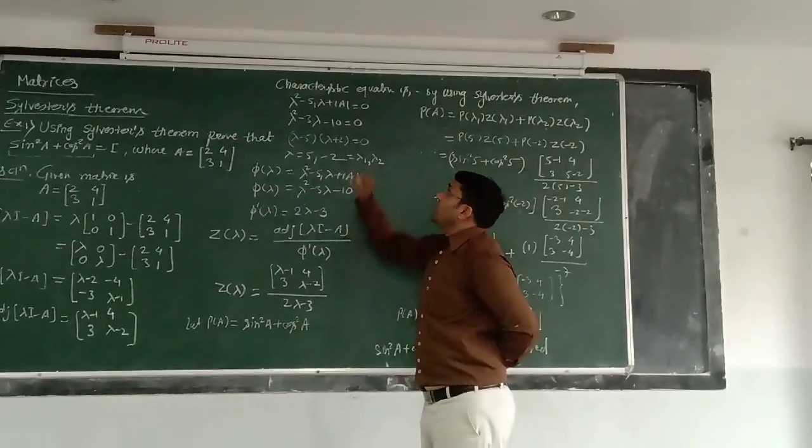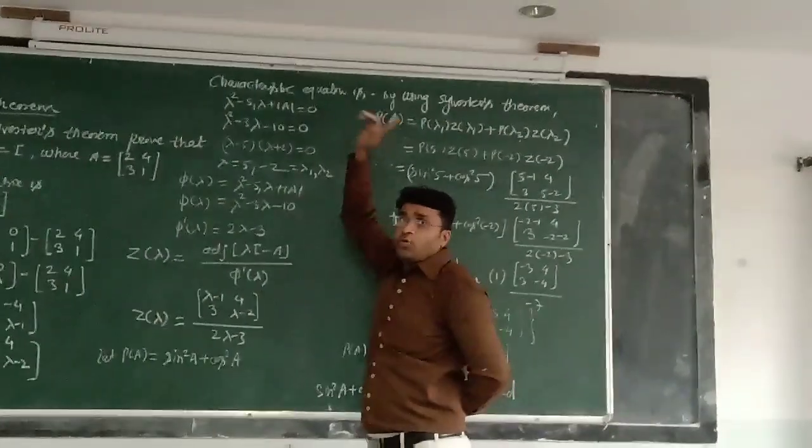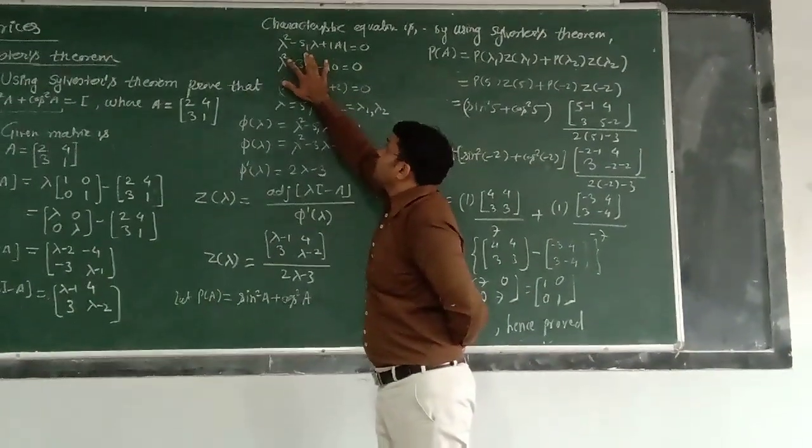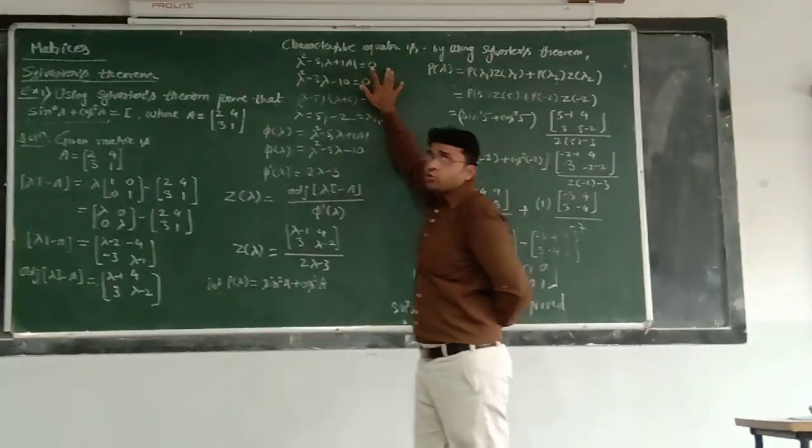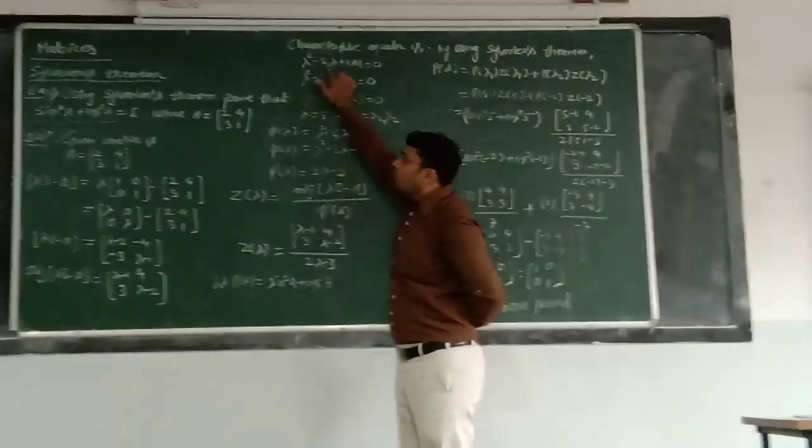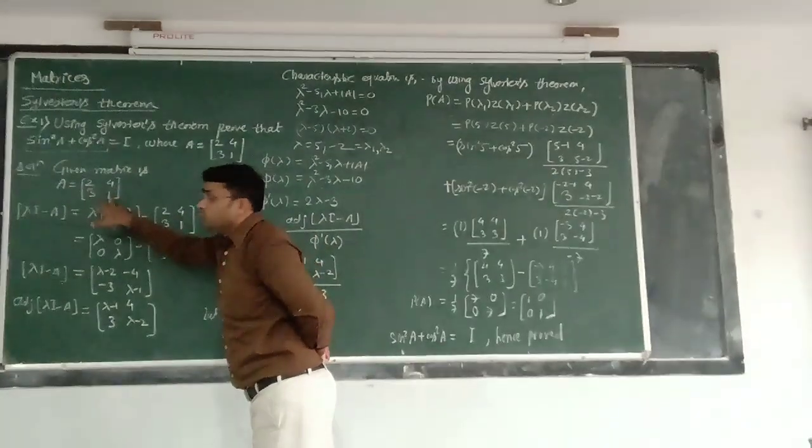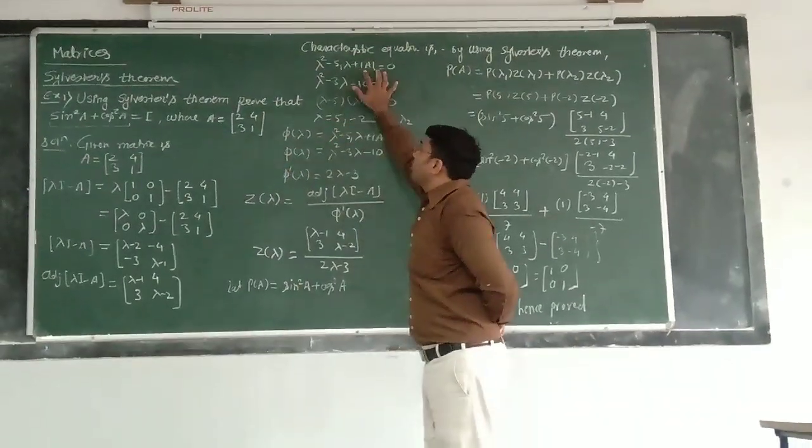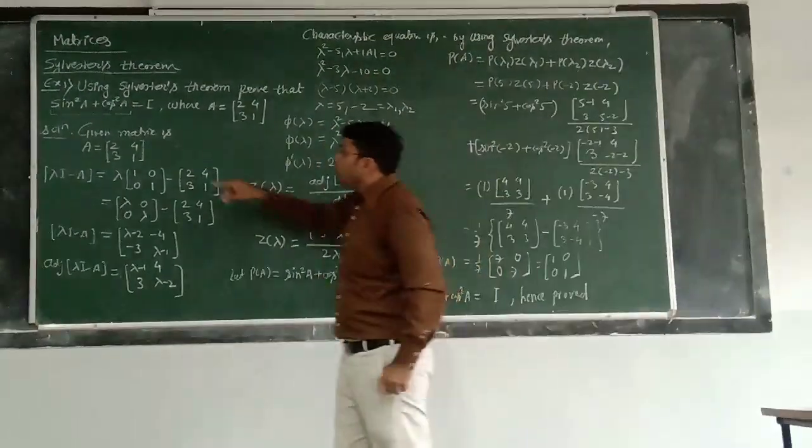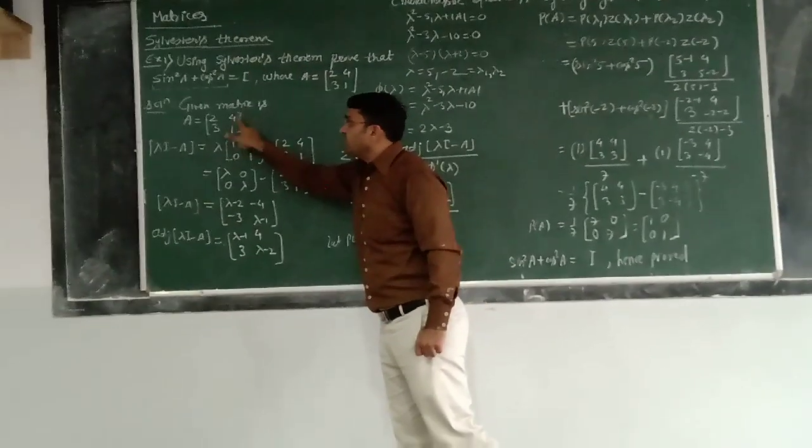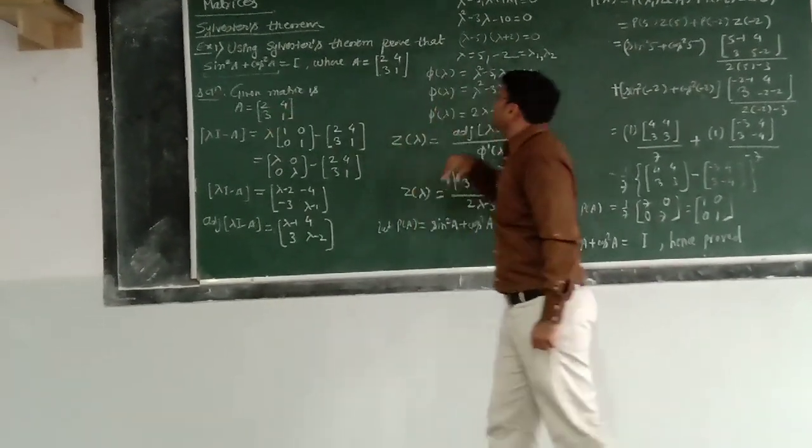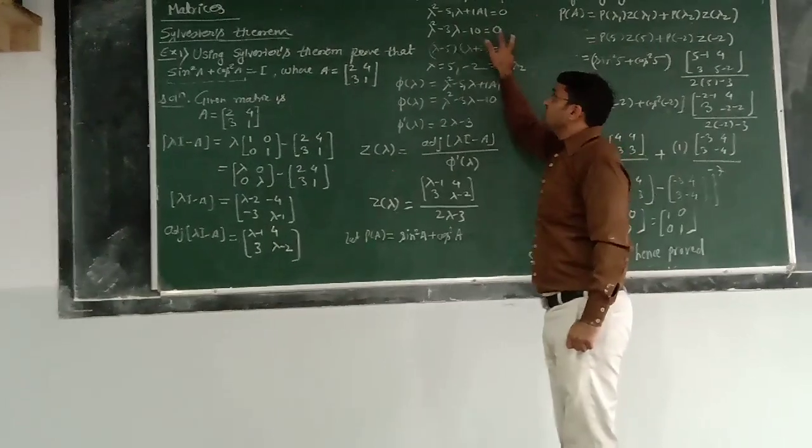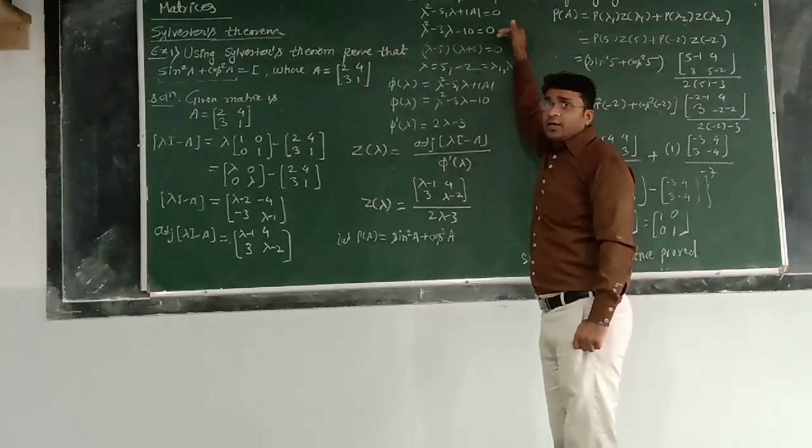Next job is to calculate characteristic equation. So, just having the shortcut formula, I have told you, lambda square minus S1 lambda plus determinant of A equals to 0. S1 stands for sum of diagonal, 2 plus 1. In the determinant of A, we can calculate very easily just by the cross multiplication. So, it is minus 10 here. This is the quadratic equation. We solve it.